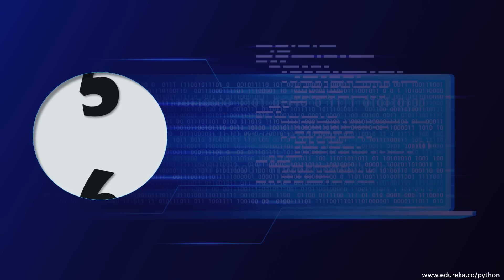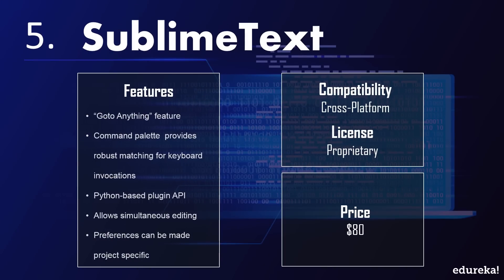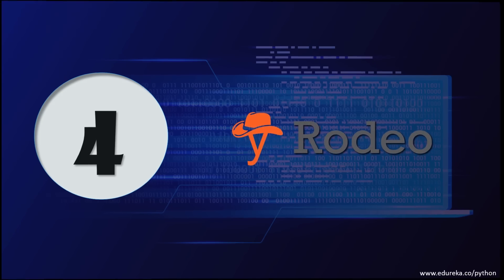At the 5th position is Sublime Text. Sublime Text is a cross-platform IDE priced at $80, developed in C++ and Python, and supports other languages as well. Its features can be enhanced using plugins. The 'Go to Anything' feature allows quick access to files, symbols, or lines. Its command palette provides robust matching for keyboard invocations, Python-based plugin APIs are supported, and it allows simultaneous editing with project-specific preferences.